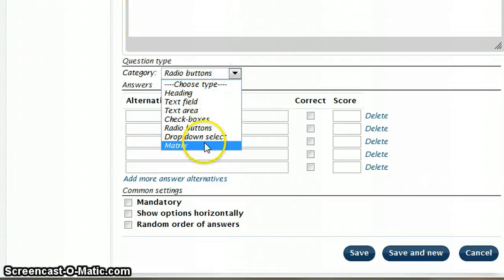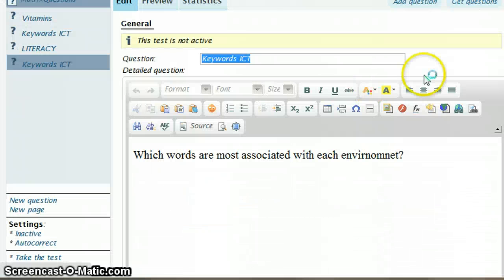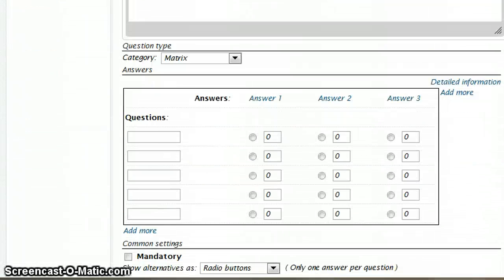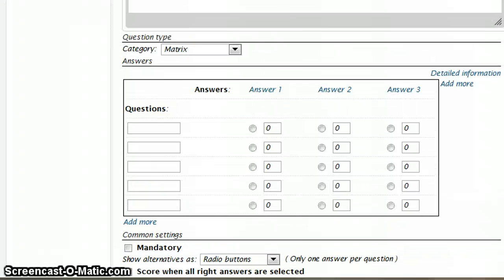So here I'm going to choose matrix, and then some weird stuff happens - you've got a thing which comes up like this. So what I'm going to do is write my keywords down here that I want students to think about.